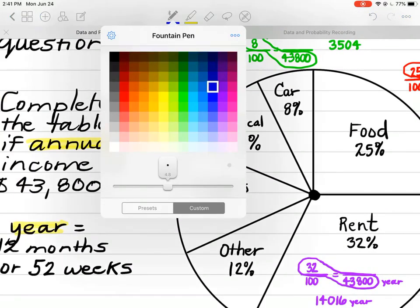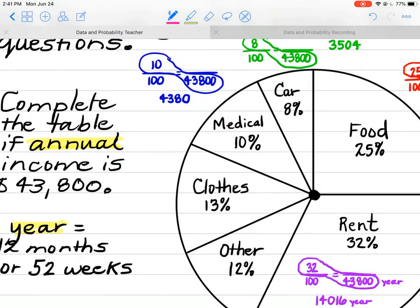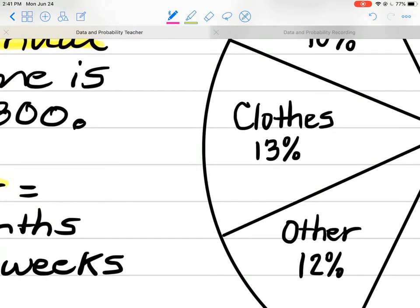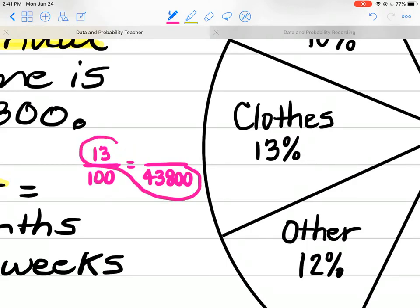Clothes. We're getting there, guys. I know this is a time-consuming process. Budgeting is time-consuming, but it will help you manage your money very well. If you learn how to do this and stick to it, you can save money. And I should have made a savings category. So 13 over 100, $43,800.